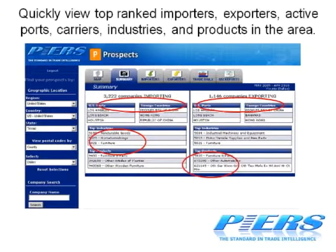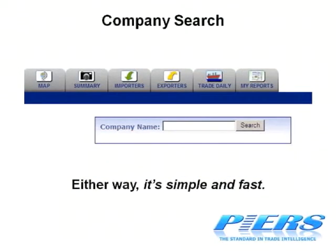For any given trading company, U.S. import-export shipment records are geocoded and represented geographically. Or, to conduct a company search, just enter the name of the company of interest. Either way, finding the information you need is simple and fast.